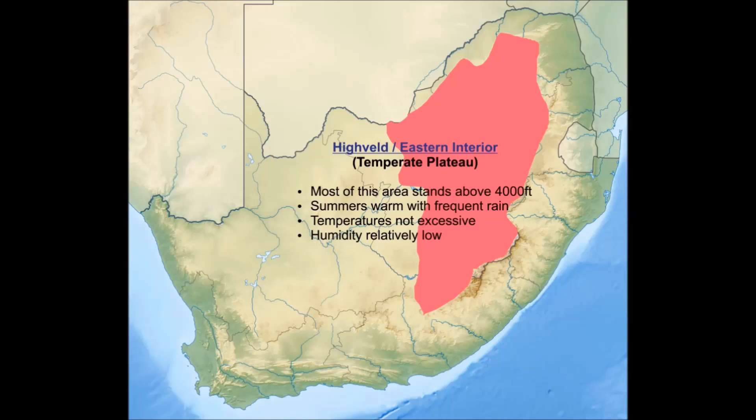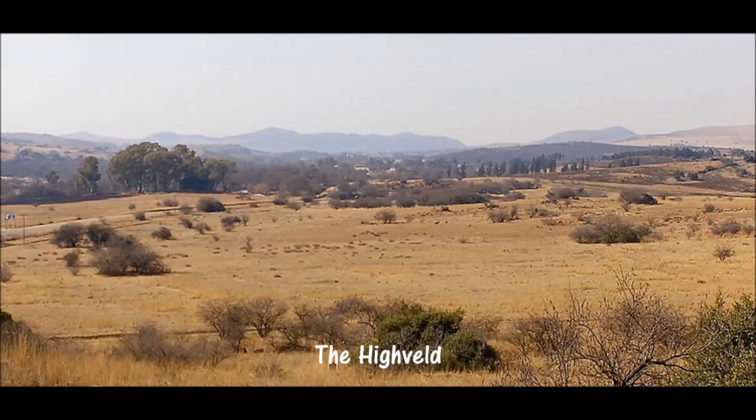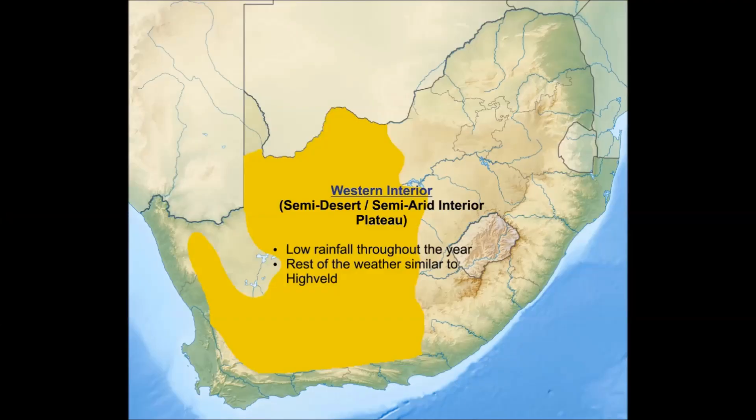The western interior is classified as a semi-desert or semi-arid interior plateau. The prefix semi means half, partially, or incomplete, and is used here to imply that the majority of desert or arid climate characteristics are present, but not all. Again, the words interior plateau denote its location. This region experiences low rainfall throughout the year but in all other aspects is similar to the eastern interior.